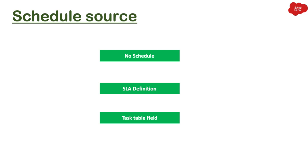The third option is task table field. This means if you have any schedule mentioned in one of your task table fields, you can also utilize that. If you have a table where schedules are already being selected for different purposes, you can select that field as well, which will reference the same schedule table — and it can be any table you want.